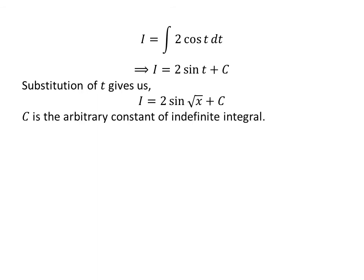Let us substitute t in terms of x. As we had assumed t equals square root of x, so I equals 2 sine of square root of x plus C.